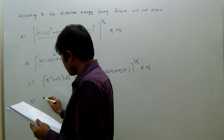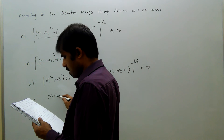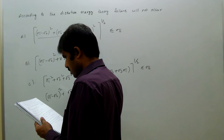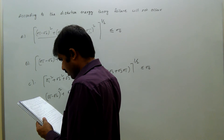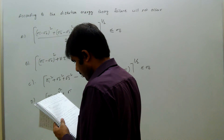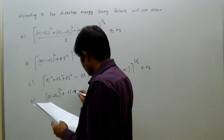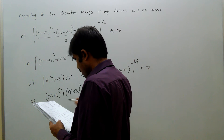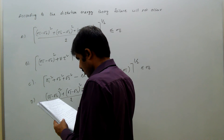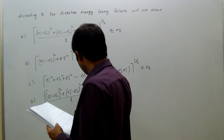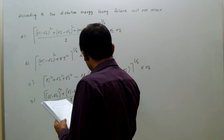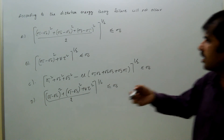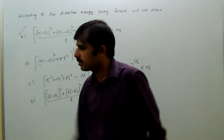Option D: sigma 1 minus sigma 2 square plus sigma 1 minus sigma 3 square plus 4 tau square, divided by 2, to the power of half, less than or equal to sigma 0. So, according to distortion energy theory, option A is the correct one.